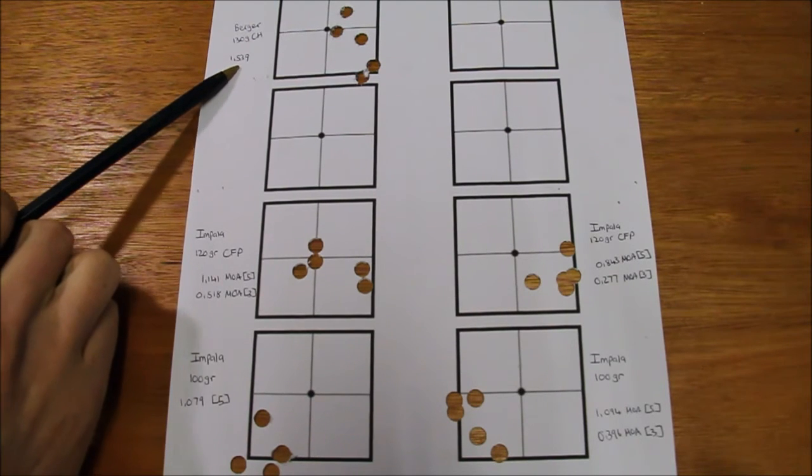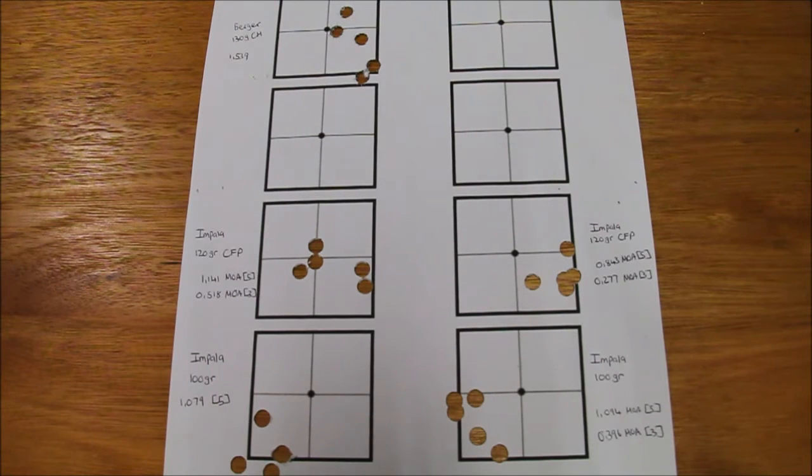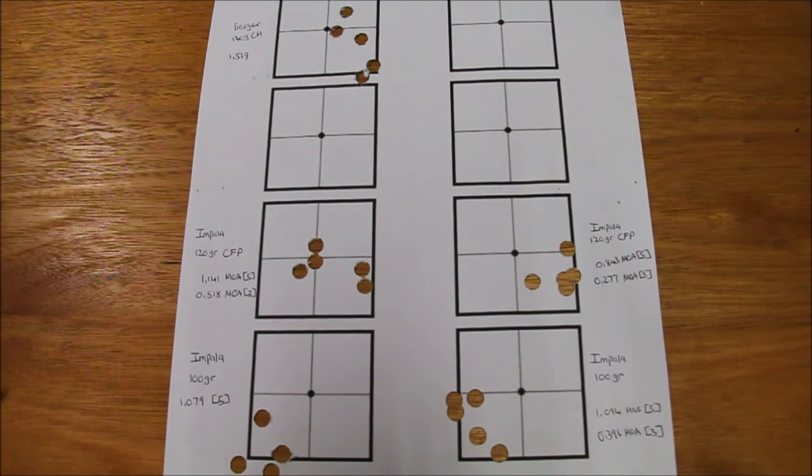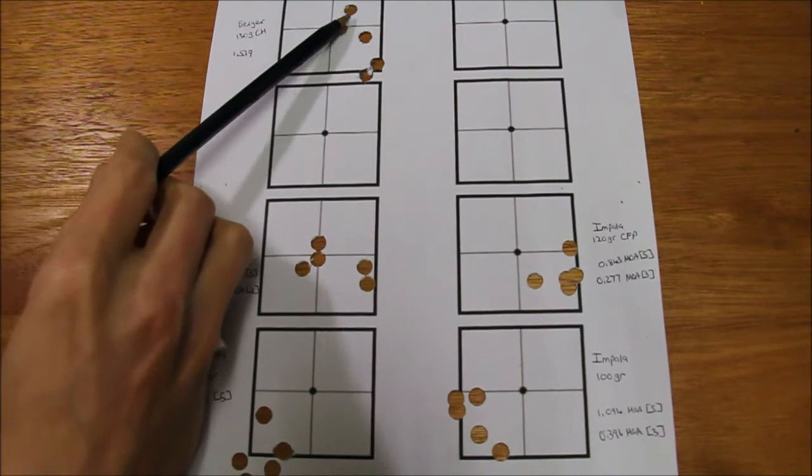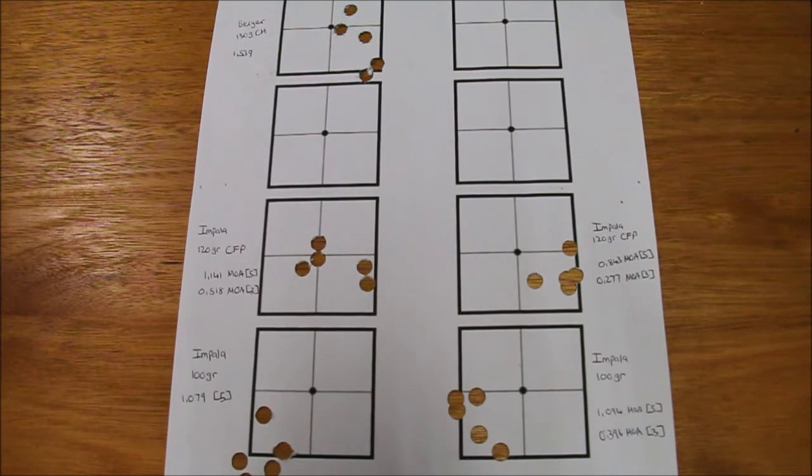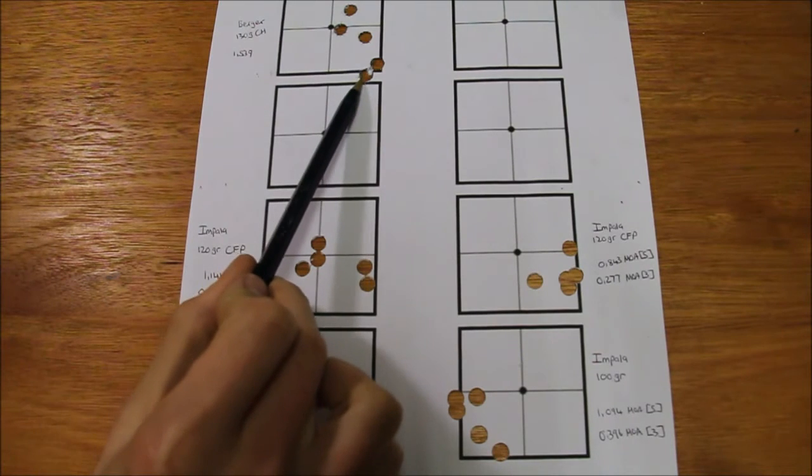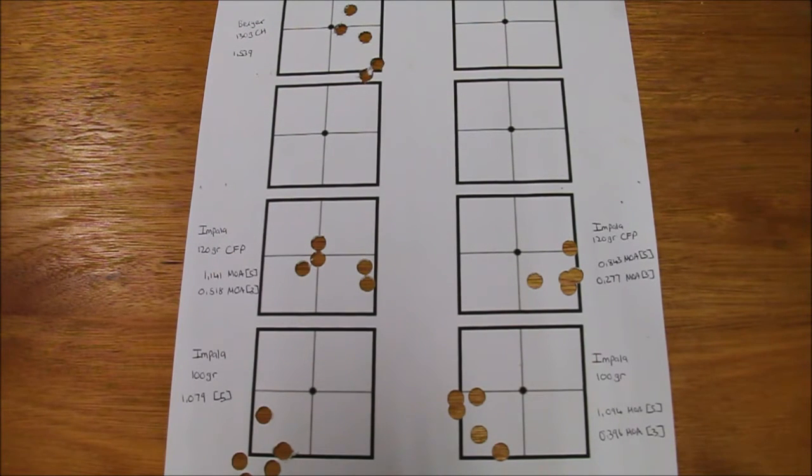So on the top left I shot a control group using my Berger 130 grain load. What's interesting about this group is these three that lie close to each other were shot without using the hair trigger on my rifle. As soon as I started using the hair trigger, the two shots at the bottom here resulted from that.